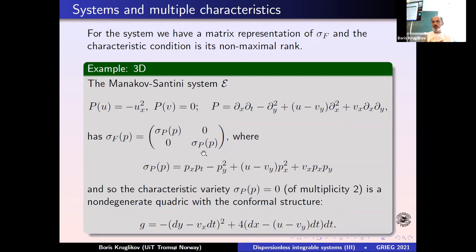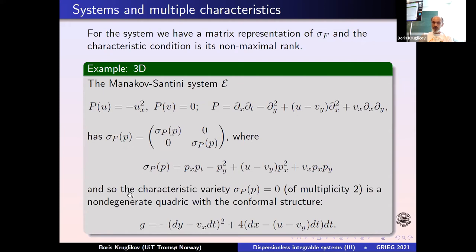Disregarding multiplicity, the important thing is that we have a quadric on T*M. We want to see the quadric in T, so we compute duality: invert the metric, and then we have the corresponding conformal structure. Here's the metric I showed previously when I discussed that this system is a master system — you can call it the assigned Einstein–Weyl structure. Of course the metric itself doesn't completely determine the Einstein–Weyl structure; we'll come to this later.